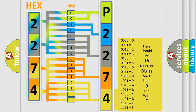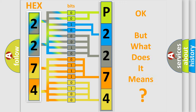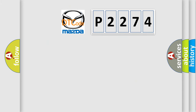We now know in what way the diagnostic tool translates the received information into a more comprehensible format. The number itself does not make sense if we cannot assign information about what it actually expresses. So, what does the diagnostic trouble code P2274 interpret specifically for Mazda car manufacturers?